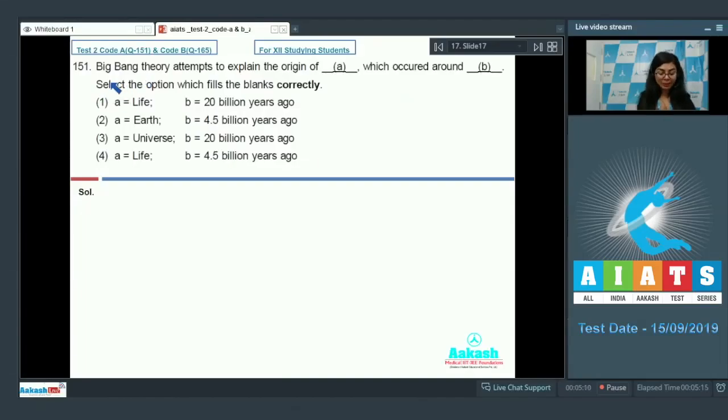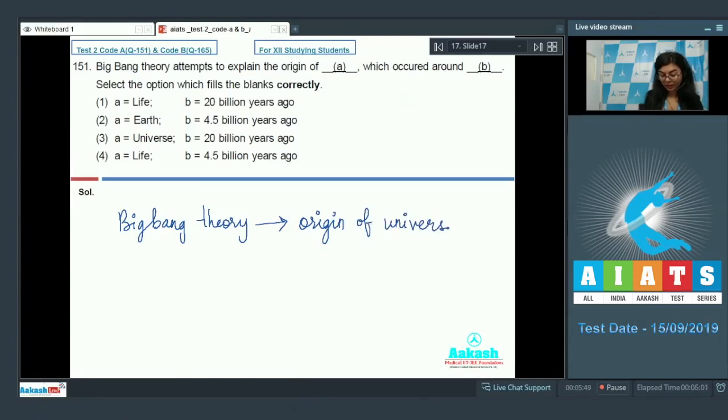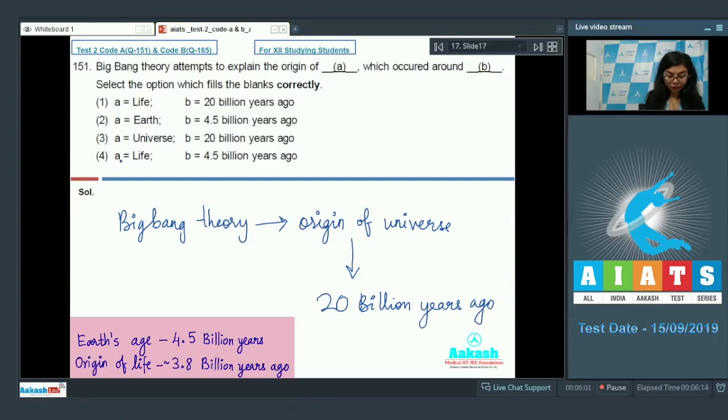Moving on students, question number 151. Big Bang Theory attempts to explain the origin of dash which occurred around dash. Select the option which fills the blanks. This is a very factual data-based question. According to Big Bang Theory, which attempts to explain the origin of universe, this origin of universe occurred around 20 billion years ago. It's a direct pick from NCERT. The correct option would be option number 3.